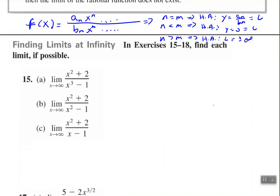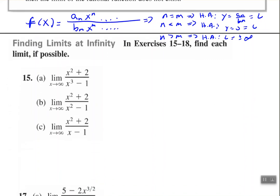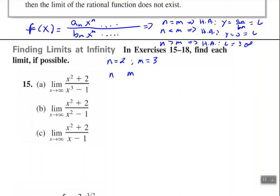So for number 15, we want to find the limit if possible. I have my numerator and denominator in descending variable order. My numerator degree is 2; for my denominator, my degree is 3. So the degree in my numerator is less than the degree in my denominator. Therefore, from our rules, my limit equals 0.